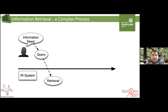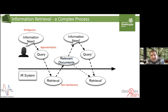However, the information need can be ambiguous, and as a result, the query will be just an approximation of the actual information need, which refers to the gap between an information need and their approximation of it. And the search results may not be satisfactory. So searchers have to engage further with the search process, going through the relevant documents, trying to improve their understanding of the information need, and then reformulate the query and submit it again. This process continues until either the search results in satisfaction of the information need, or the user abandons the search.